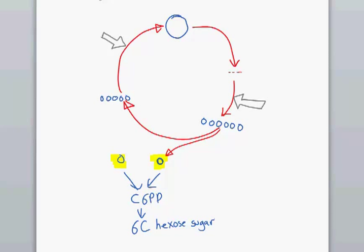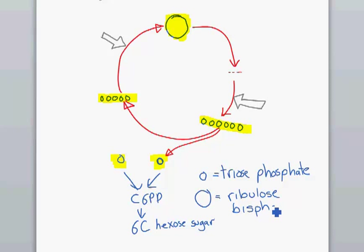The only molecules we need to know the names of are the ones in yellow. Other molecules we don't need to know the name of. So the little guy is triose phosphate, and the larger molecule is ribulose bisphosphate. That's not a typo, there is an S there.